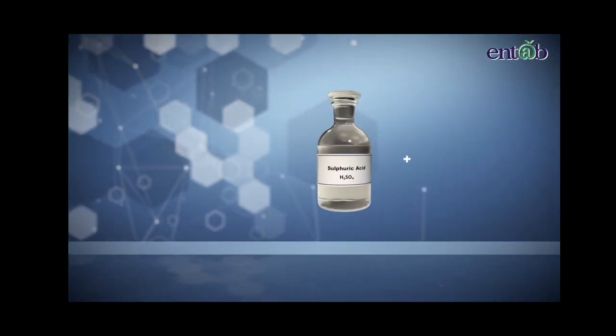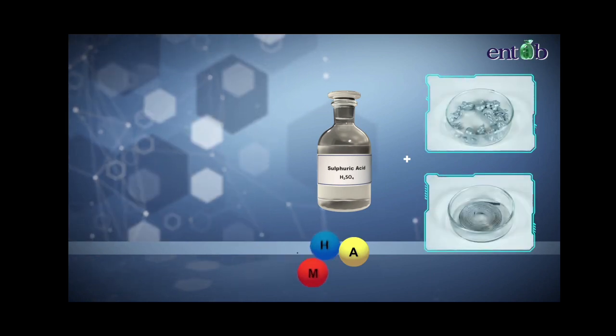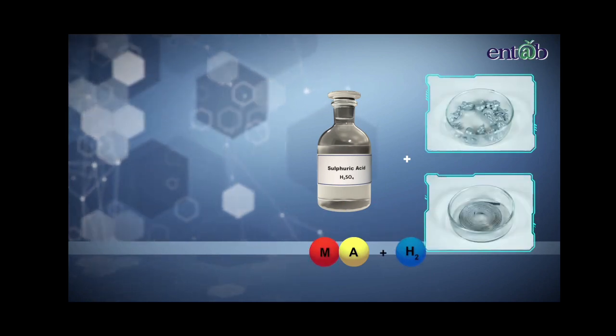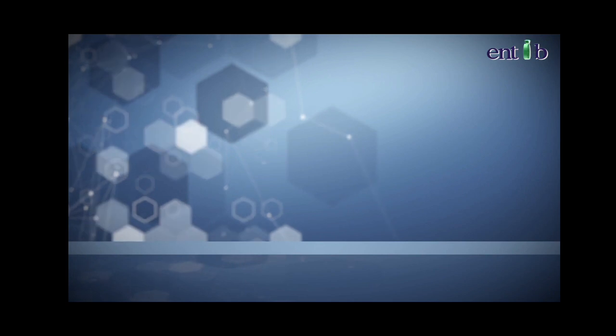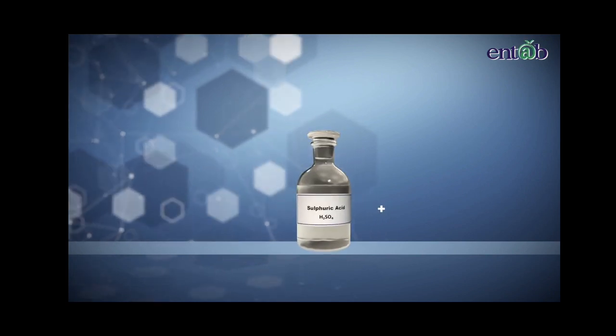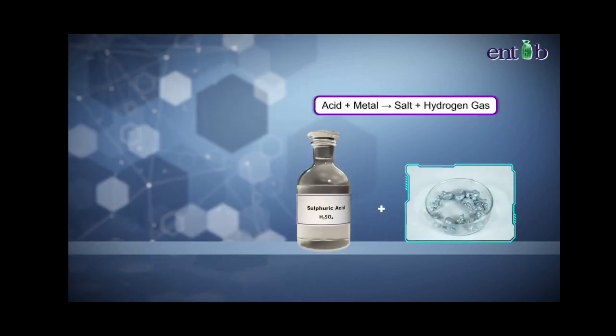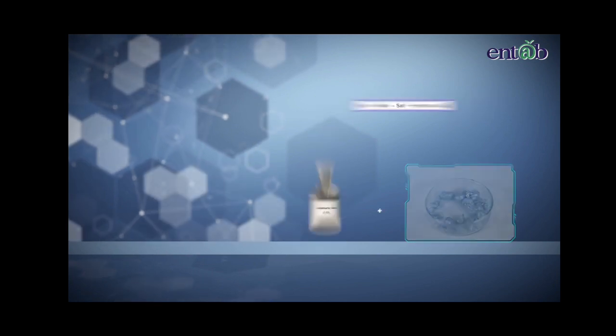Thus, we can conclude that acids react with metals to form metal salt and hydrogen gas. We can write down the general reaction of the reaction of an acid with metal as shown.